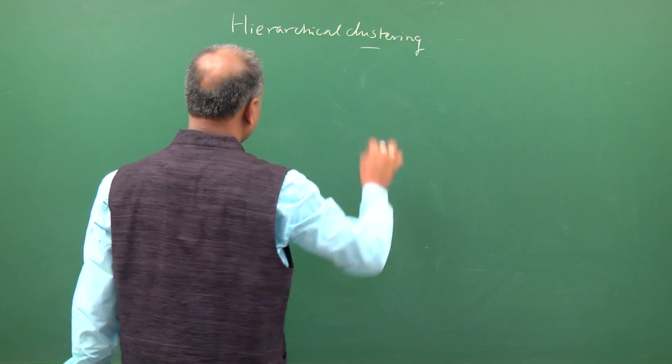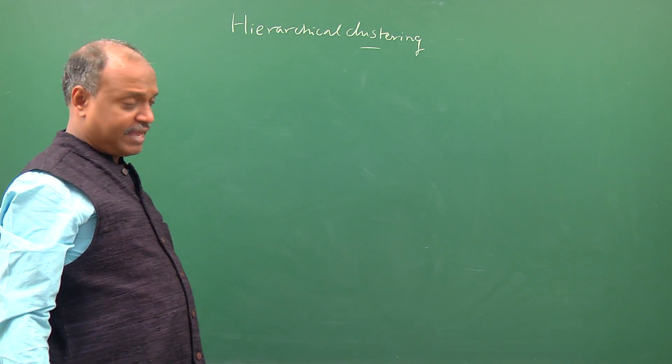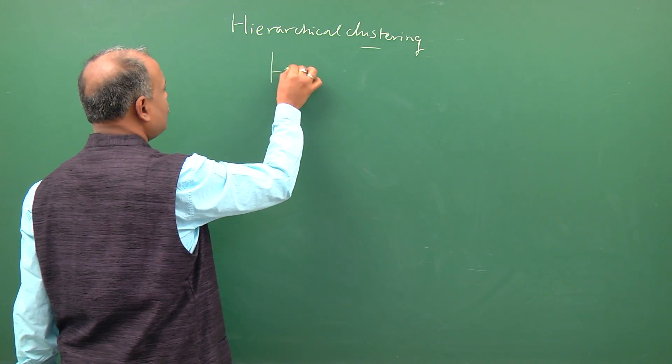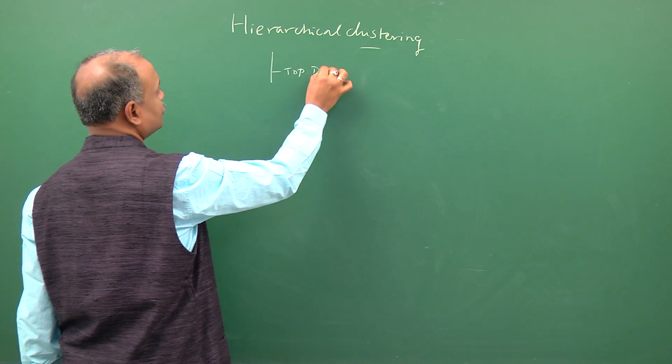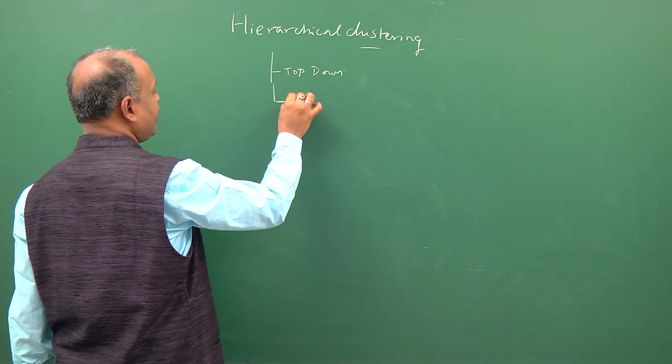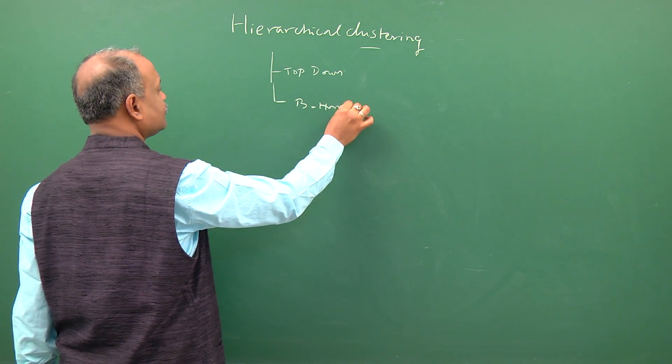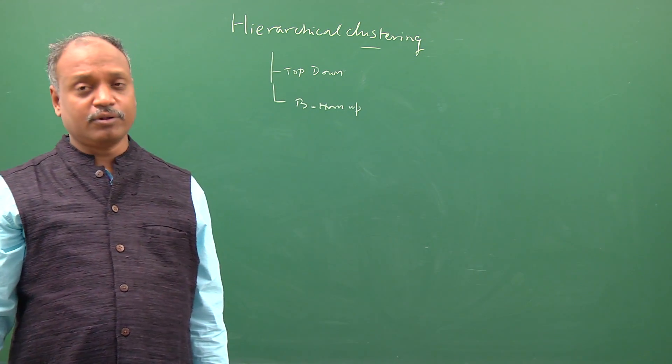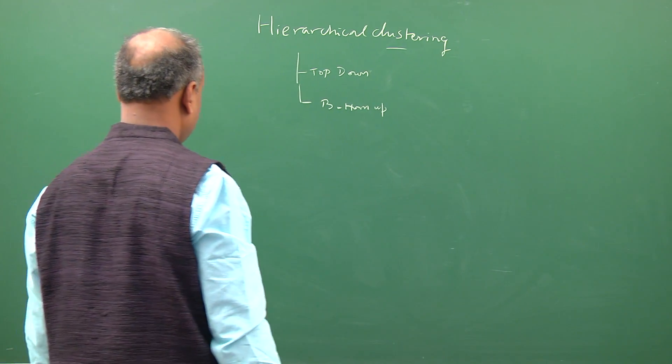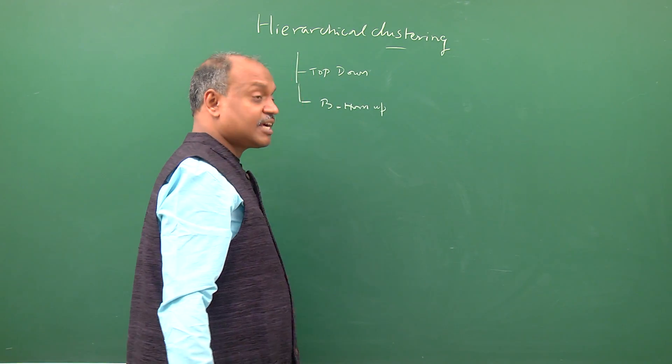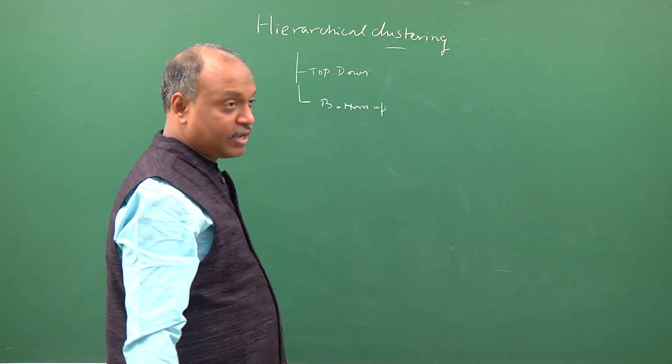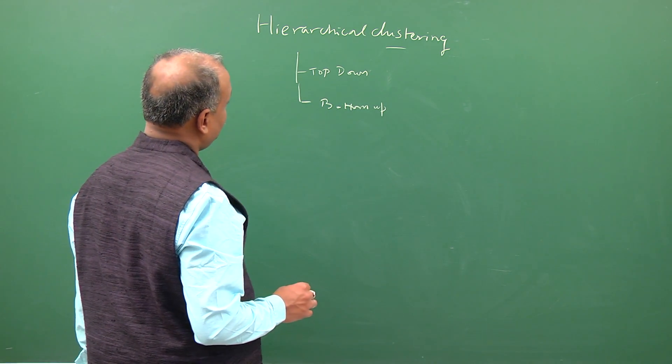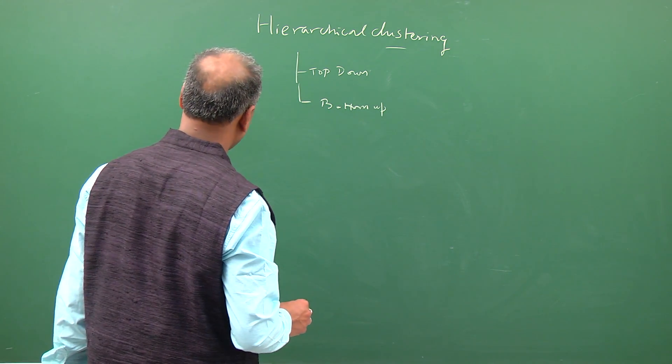In hierarchical clustering we don't define k but instead follow either a top-down approach or a bottom-up approach to formation of clusters. And then depending upon the visual API or kind of cluster topologies, you can decide what would be a good k when you stop the formation.